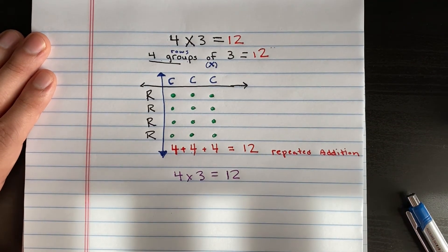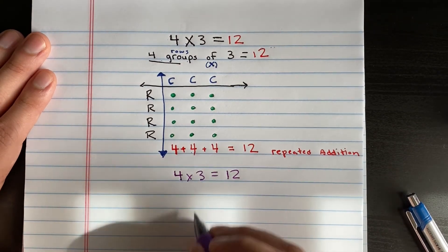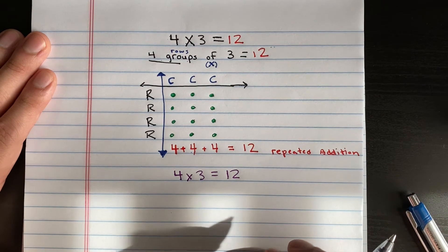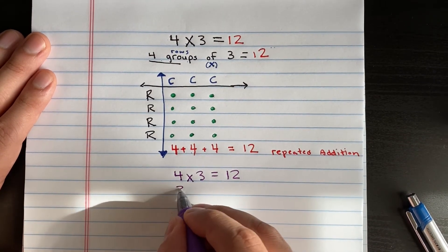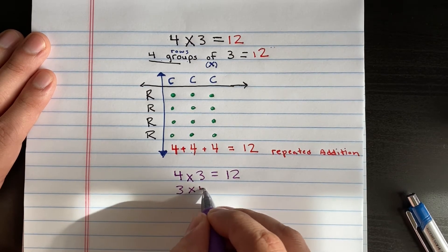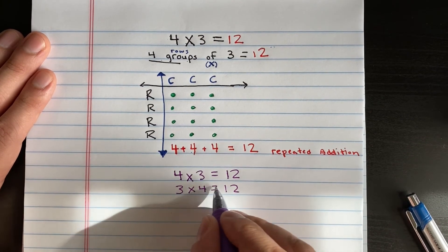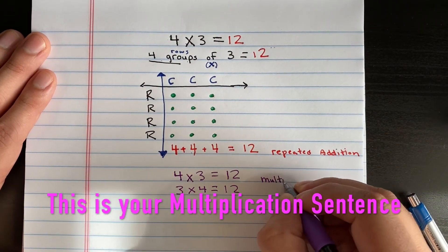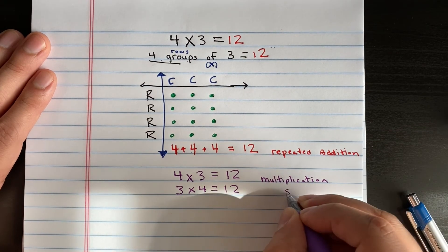I also like to do the commutative property just for practice. Commutative property you learned in first grade. You should know, it's just the number backwards, and it still equals the same thing. So let's go ahead and, or the problem backwards. Let's go ahead and flip this problem. Three times four. And it's still going to equal twelve. Same thing. It just looks a little different. Perfect. And this is our multiplication sentence.